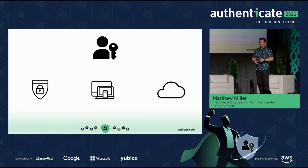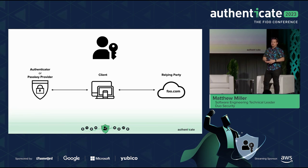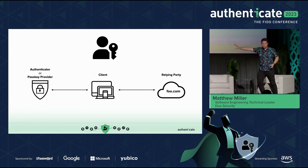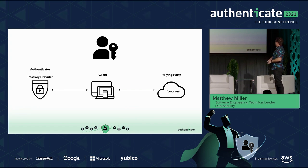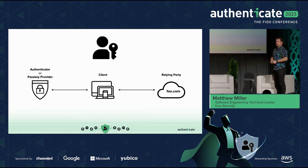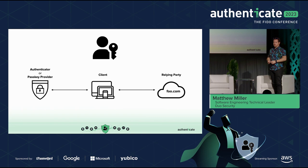In FIDO2 authentication, just for a brief overview, we have three main players. The authenticator or passkey provider is on the left. The client here is the browser — WebAuthn is a browser API after all, and that's the primary way that passkeys will be used. And then wiring up those WebAuthn API calls is your relying party — this is the website that you're trying to log into.